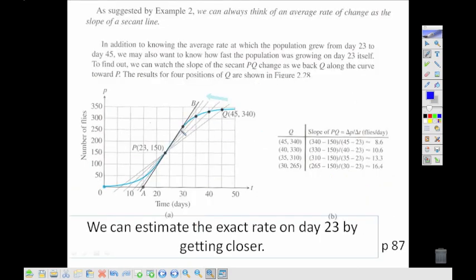Now if we're looking for an instantaneous rate, we can be looking at bringing these points closer and closer to the point that we want to know about. So if we want to know about day 23, we bring our rates of change closer, and eventually our line starts to look more and more like a tangent line, or the line that's actually just touching in one place.